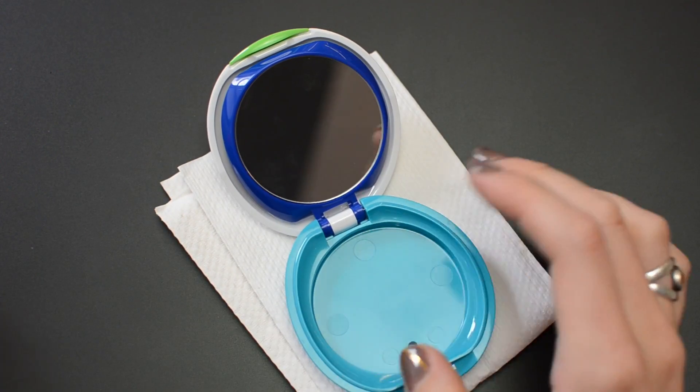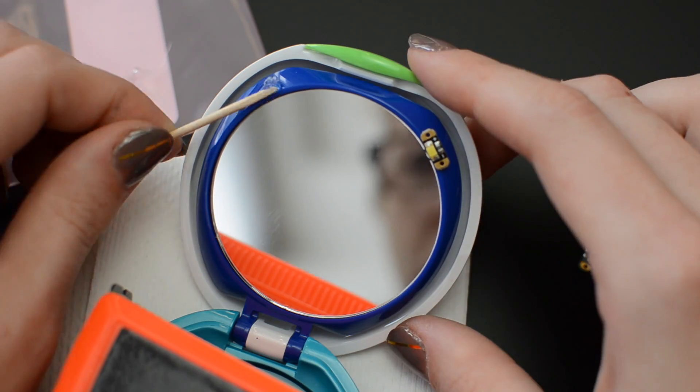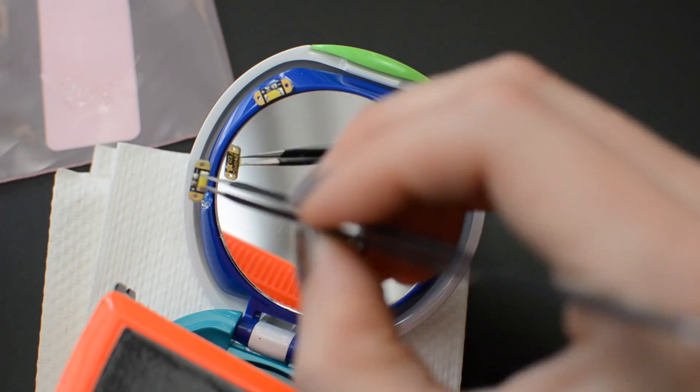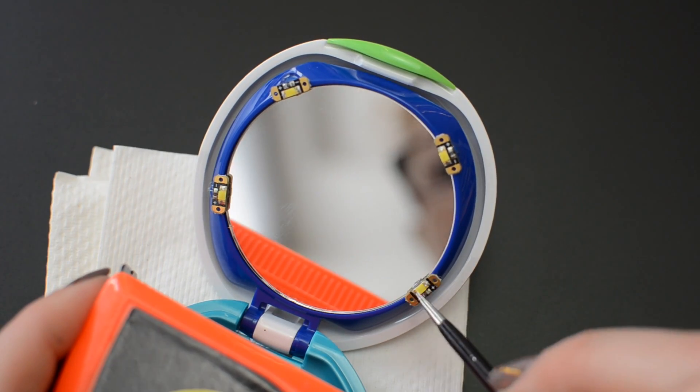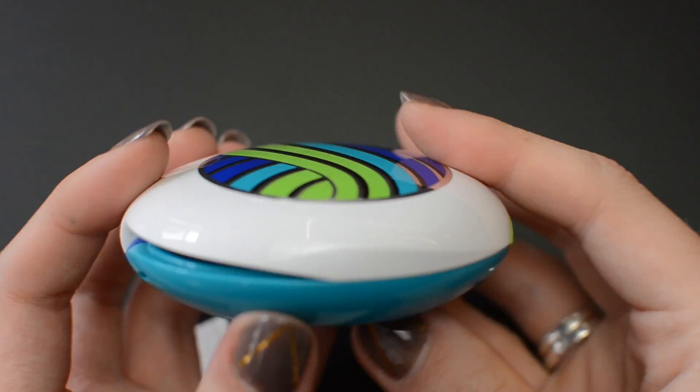First, stabilize your wobbly compact on a towel with a weight to hold it steady. Use E6000 adhesive and a toothpick to glue the sequins in place where they won't prevent the compact from closing. Tweezers come in handy for fine-tuning their positions. Let the glue dry before proceeding to the soldering step.